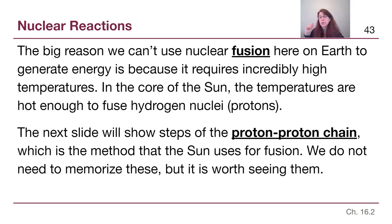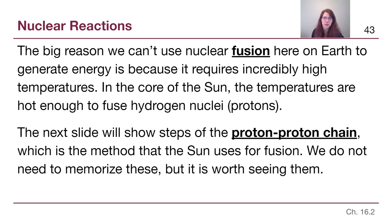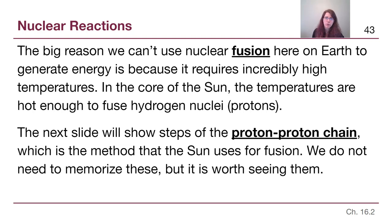For the sun, the particular process it goes through is called the proton-proton chain. We need to be able to recognize that term, especially because in the next module when we talk about chapters 22 and 23, we'll discuss the fact that low-mass stars like the sun use the proton-proton chain, but higher-mass stars actually use a different type of fusion. We want to be able to tell the difference. We do not need to memorize the steps I'm about to show — I'll show them once so we understand how the outcome actually happens.